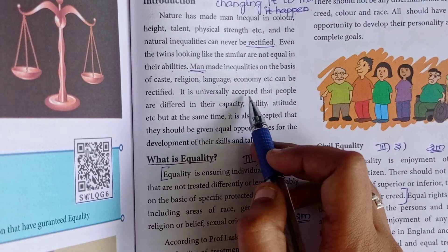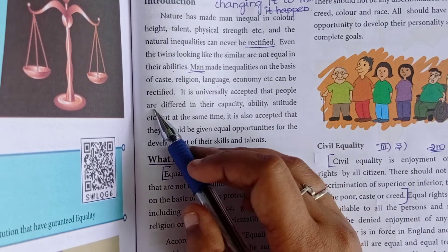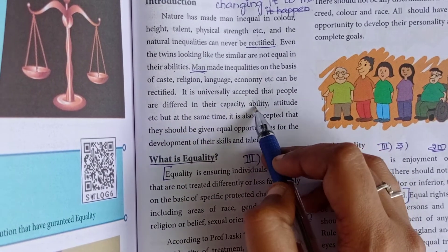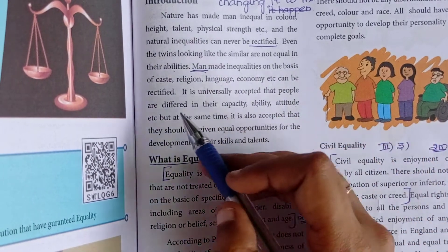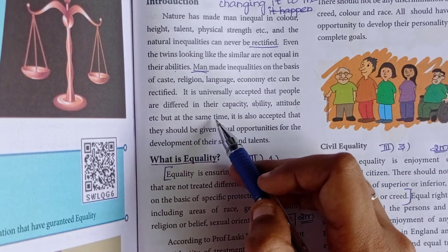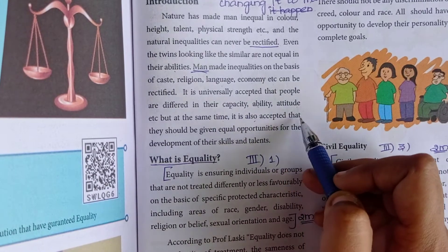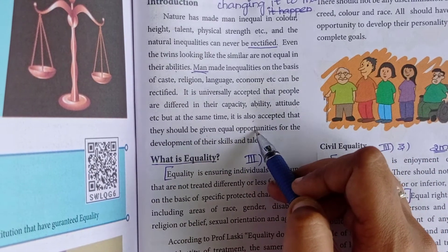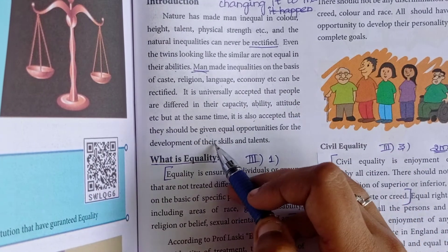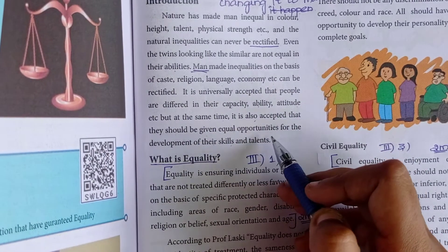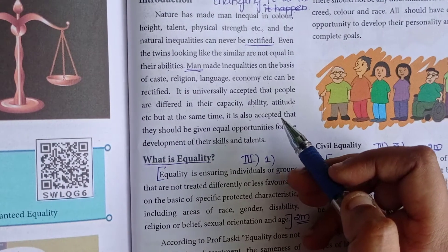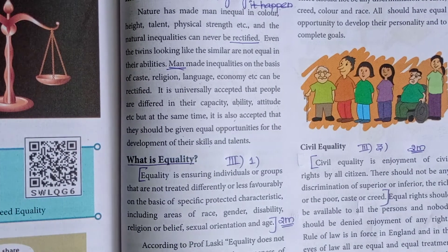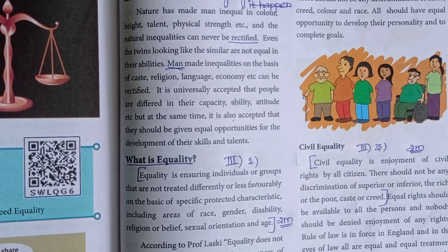It is universally accepted that people differ in their capacity, ability, and attitude. But at the same time it is also accepted that they should be given equal opportunities for the development of their skills and talents. Everyone should be given equal opportunities.